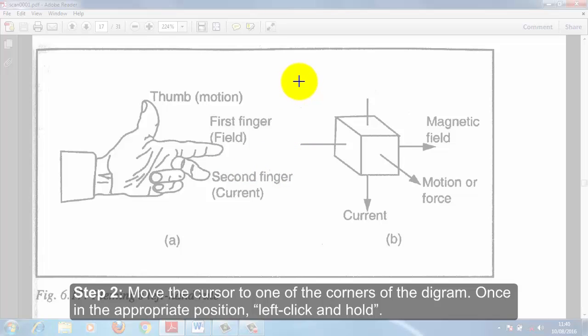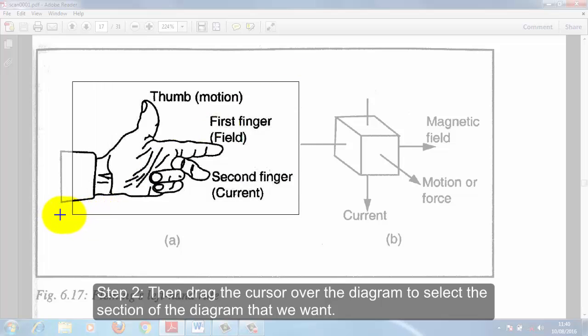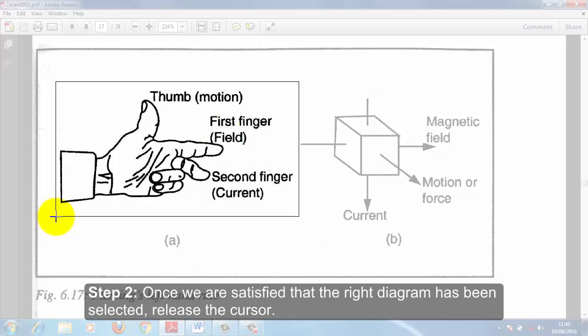Once in the appropriate position, left-click and hold. Then drag the cursor over the diagram to select the diagram that you want. Once we are satisfied that the right diagram has been selected, release the cursor.